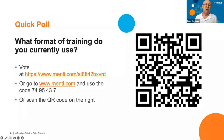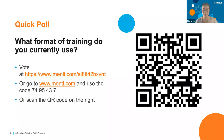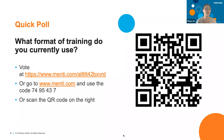We're going to have a little poll about the format of training you might currently use. You can participate by going to the direct link we'll share in the chat, going to menti.com and typing in the code 7495437, or scanning the QR code on the right side with your cell phone, which will take you to the voting page.